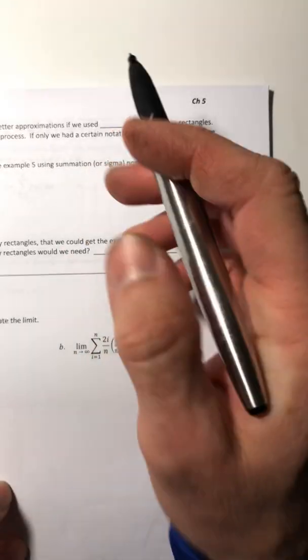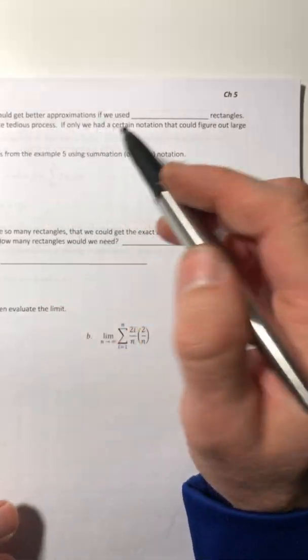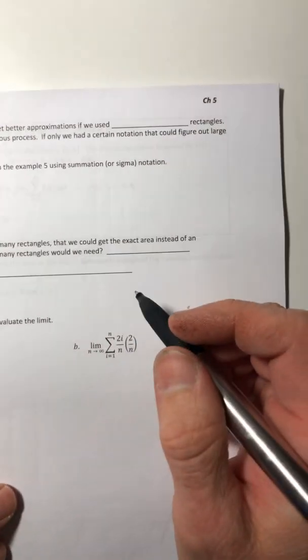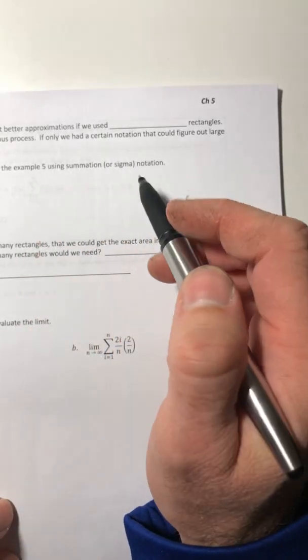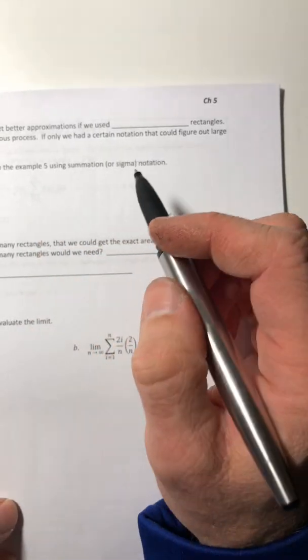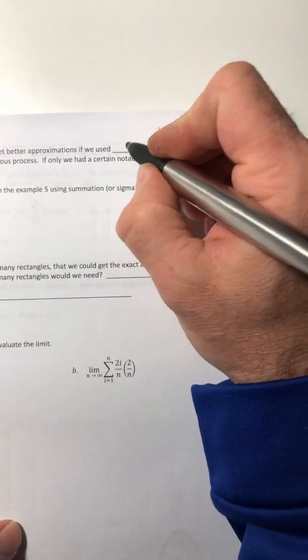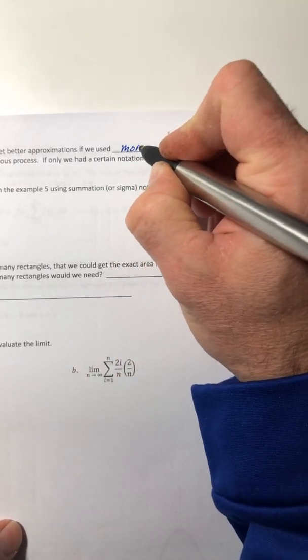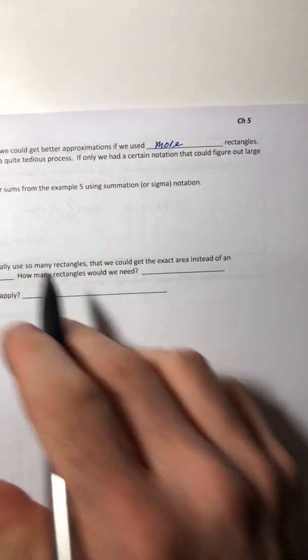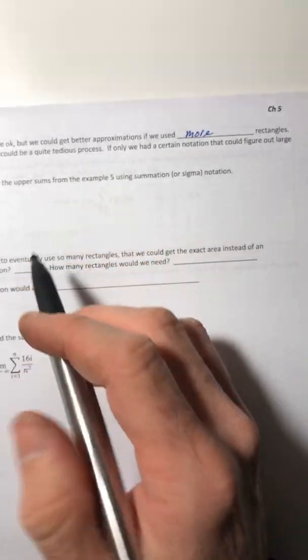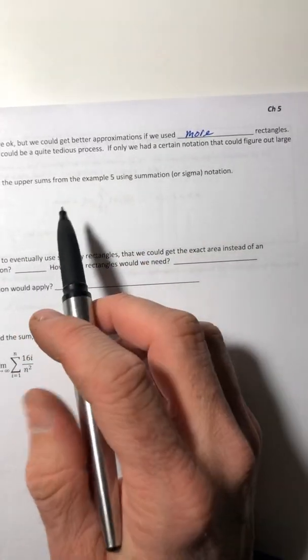So these areas are okay, but they're just approximations. They're not actually equal to the area under the curve, but we could get a better approximation if we used more rectangles. But if we started cramming more and more of them in there, that could be quite lengthy.